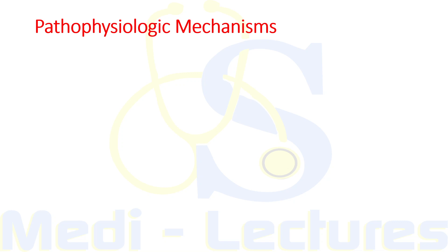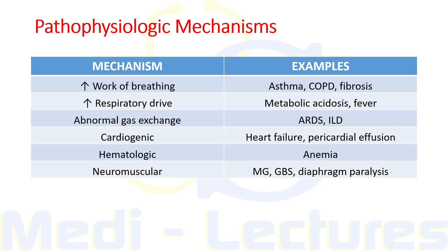For approaching any case of dyspnea, we'll have to think beyond the lungs because dyspnea is a multi-system issue. This framework asks whether the work of breathing is increased or whether dyspnea is due to failing oxygen delivery. Increased work of breathing occurs in asthma, COPD, and fibrosis. Increased respiratory drive occurs due to metabolic acidosis and fever. Abnormal gas exchange causes dyspnea in ARDS and ILD. Cardiogenic causes include heart failure and pericardial effusion. Hematological causes include anemia, and neuromuscular weakness in myasthenia gravis, Guillain-Barré syndrome, and diaphragmatic palsy also lead to dyspnea.